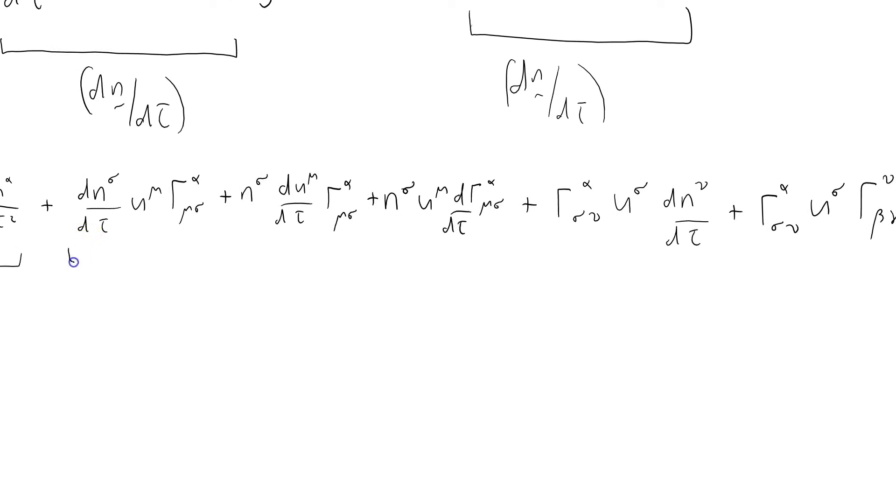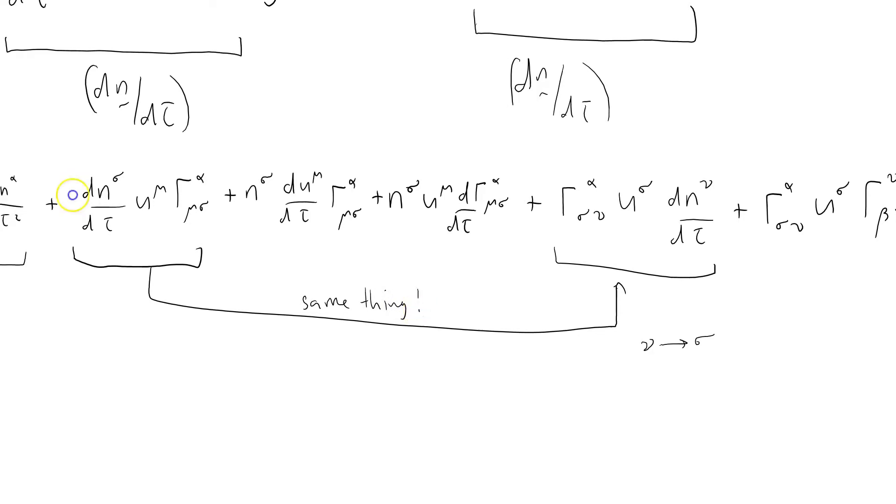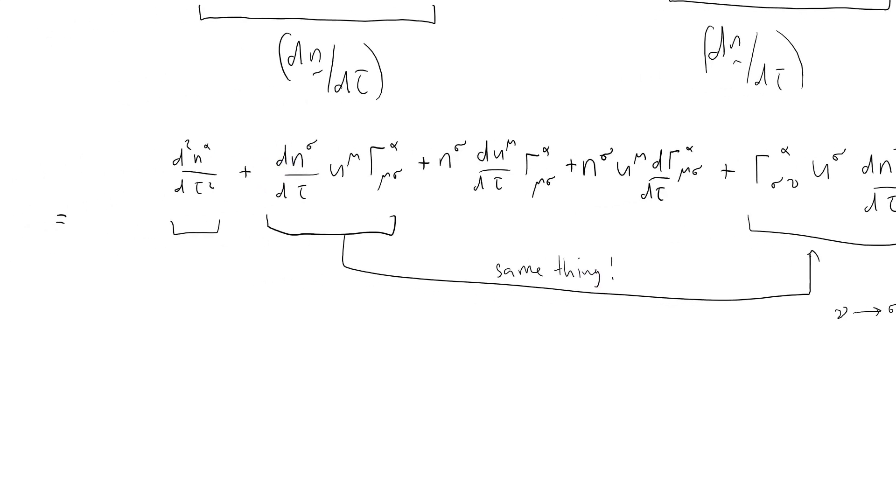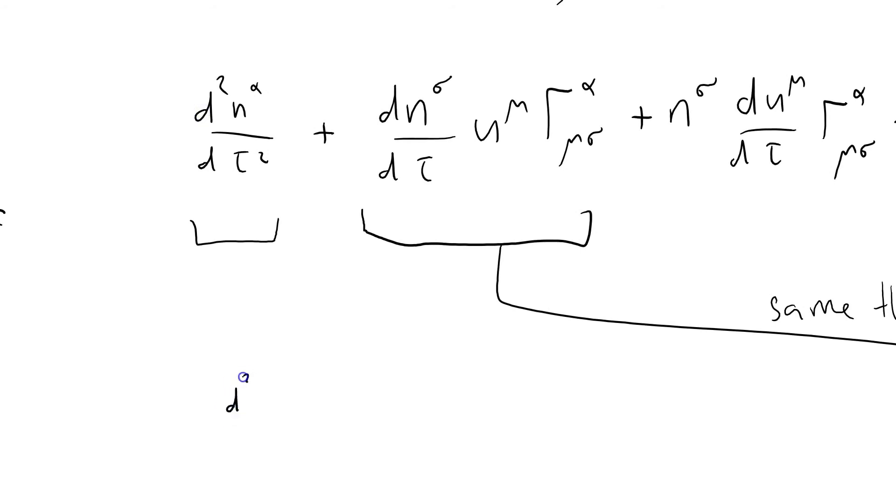They don't look the same because this one's got a sigma here summed over sigma, and this one's got a nu here summed over nu, but I can call it what I like. I'm just using a dummy index, so these two terms are the same. Which is not obvious, took me a bit of time to spot that. So I can rewrite my equation here.